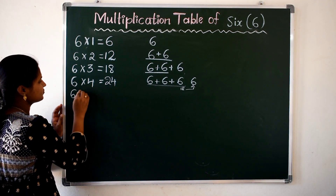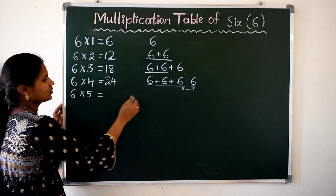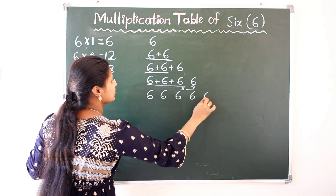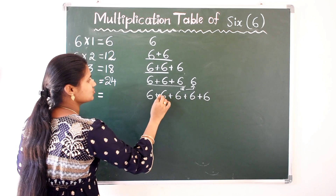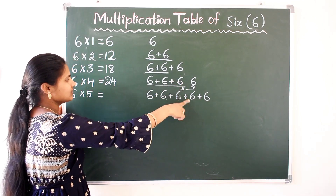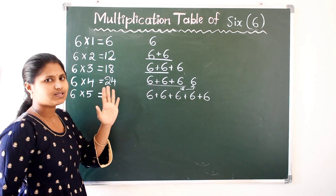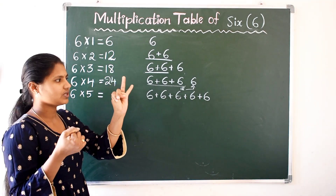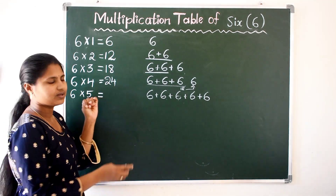Next, 6 5s are. I am going to add 6 five times. So 6 plus 6 is 12, 12 plus 6 is 18, 18 plus 6 is 24, 24 plus 6 — 25, 26, 27, 28, 29 and 30. So 6 5s are 30.